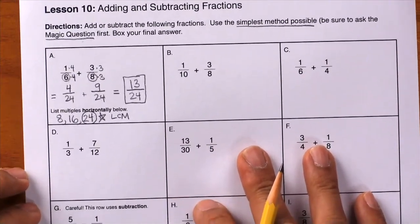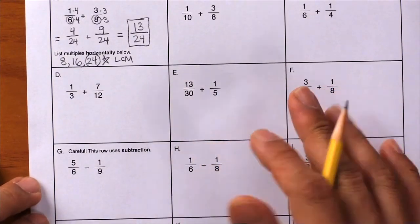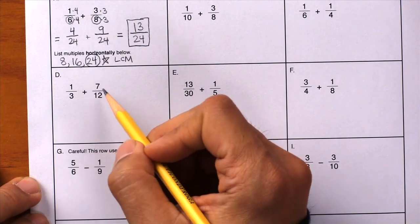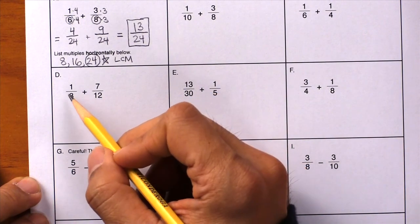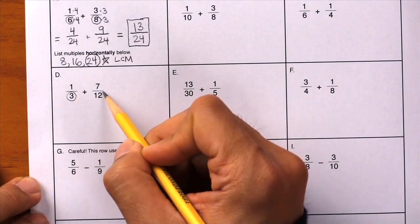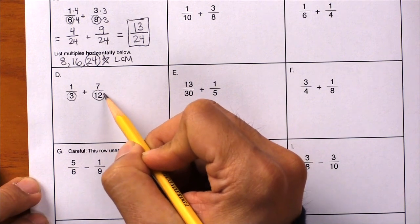One more example. Let's do box D. So here it is. We have one-third plus seven-twelfths. So they don't have the same denominator, which means they don't have the same name. So let's use the lowest common multiple.